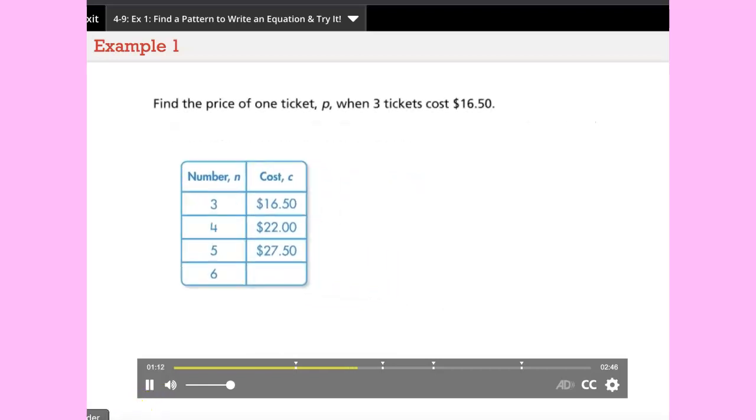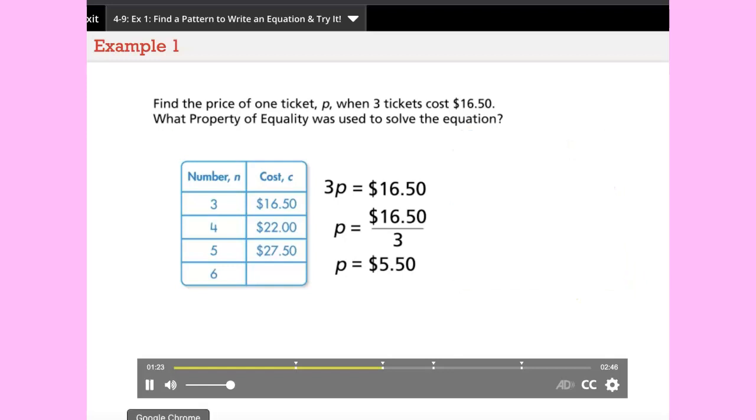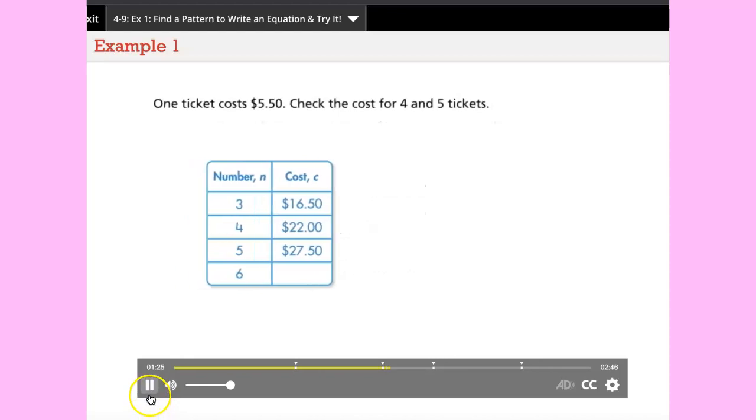Find the price of one ticket p when three tickets cost sixteen dollars and fifty cents. What property of equality was used to solve the equation? Select your answer. One ticket costs five dollars and fifty cents. Check the cost for four and five tickets.